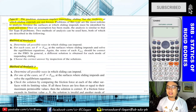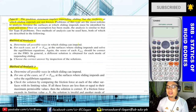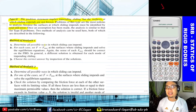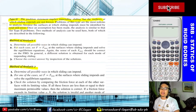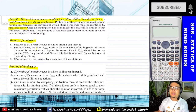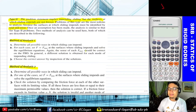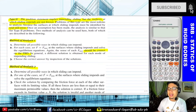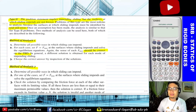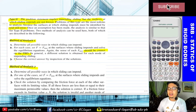For Method of Analysis 1, step one: determine all the possible ways in which sliding can impend. Step two: for each case, set F equals F sub max at the surface where sliding impends and solve the equilibrium equations. Make sure the sense of each F max is correct on the free body diagram — in general, a different solution is obtained for each mode of impending sliding. Step three: choose the correct answer by inspection of the solutions.